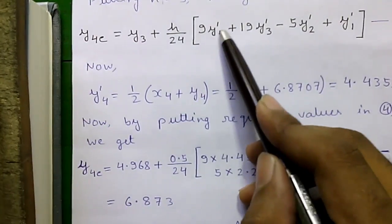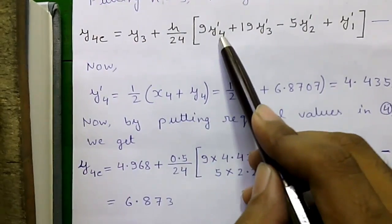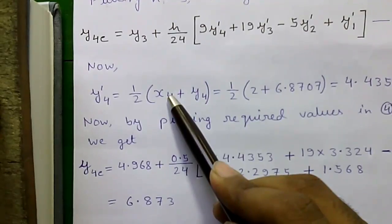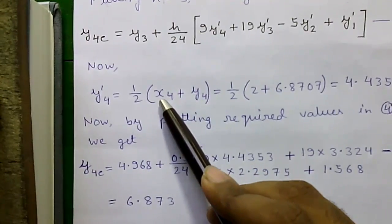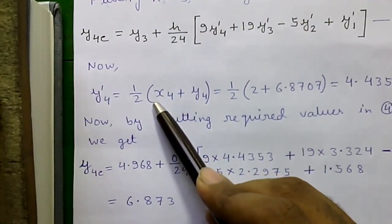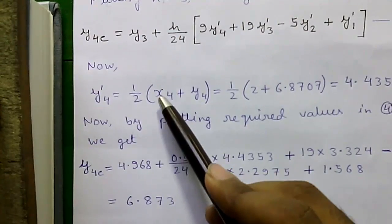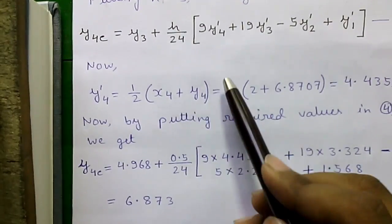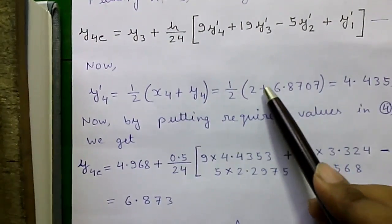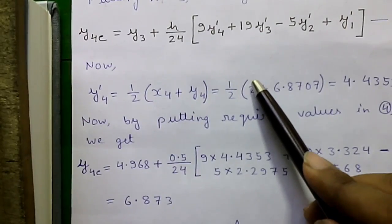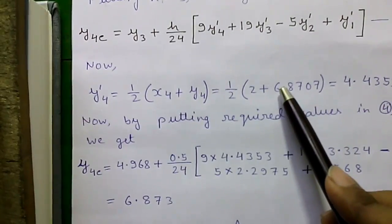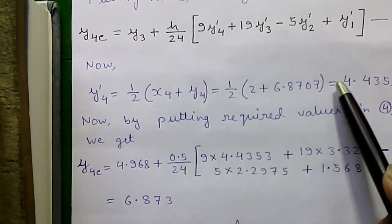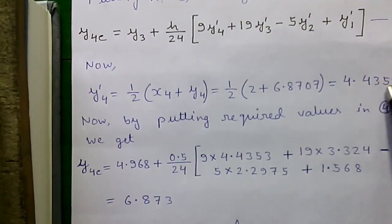Now, you can see this y dash 4 value, we don't have right now. We will calculate by using x4 value and y4 value. x4 value is the value which is given in the question, that is 2 and y4 value, which we obtain by the predictor formula. So, this 2 value is for which we have to find out the y. So, 2 plus 6.8707 is equal to 4.4353.